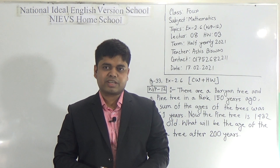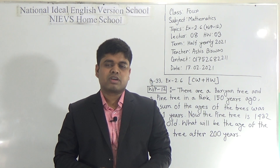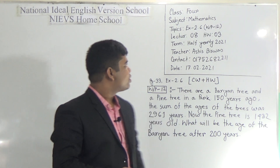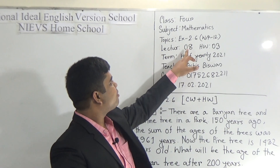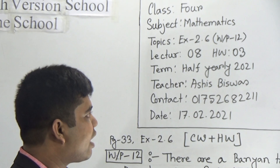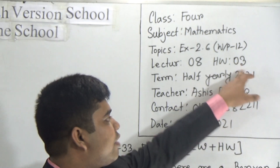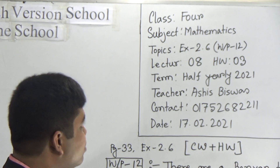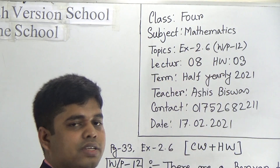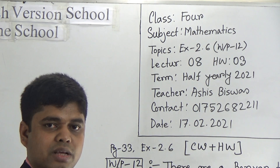Today I am going to take a math class for the students of class 4. Let us start our class. Today is our lecture number 8 of half yearly and today's SW number will be 3. Today's topic is from exercise 2.6. We shall solve an odd problem as your CW.